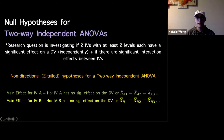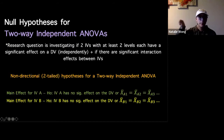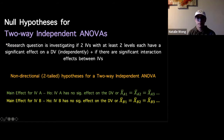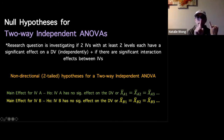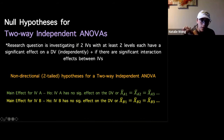Two-way independent ANOVAs. When we have a two-way ANOVA, you have two independent variables. So we need to look at the main effect for the first independent variable, the main effect for the second independent variable, and the interaction effect between the two independent variables.